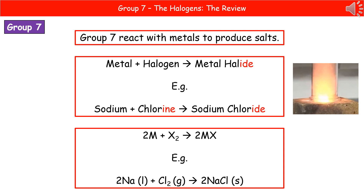We also need to write the balanced symbol equation. Using M for metal and X for halogen: 2M + X₂ → 2MX. Remember, the halogen goes around as a diatomic molecule, hence the X₂. With actual symbols: 2Na + Cl₂ → 2NaCl.